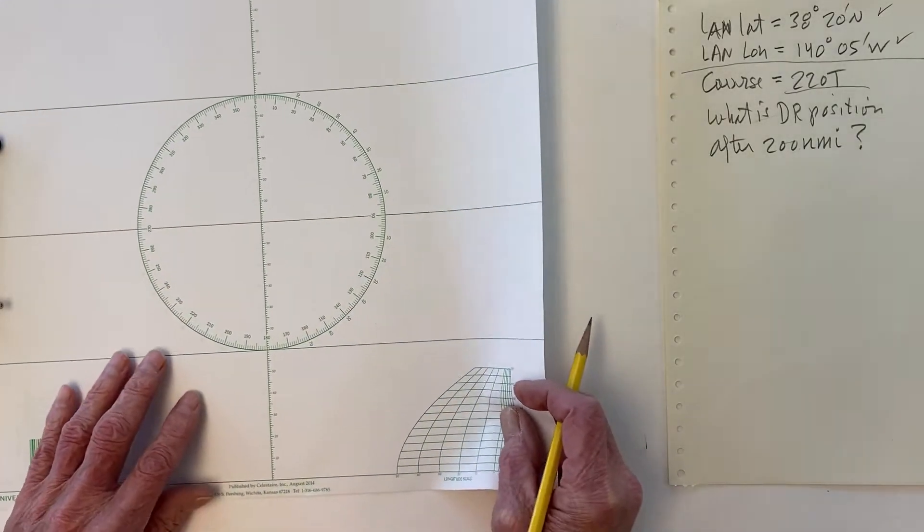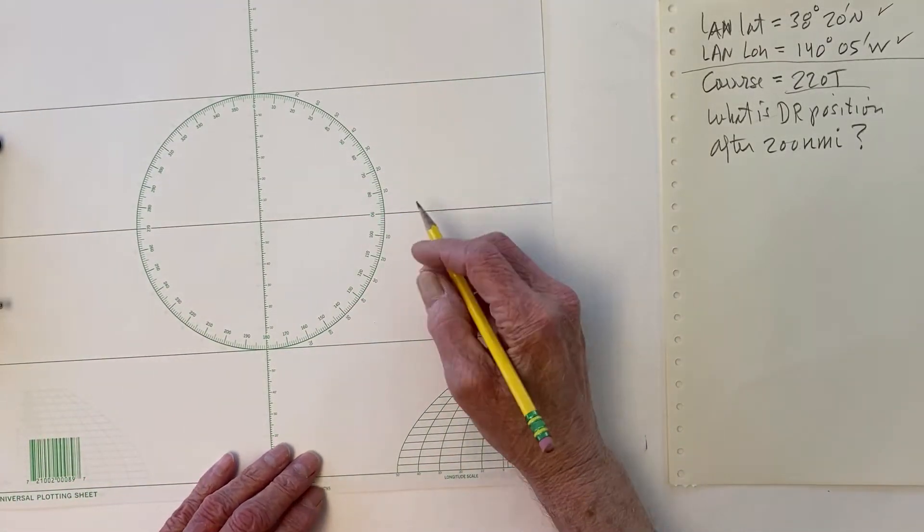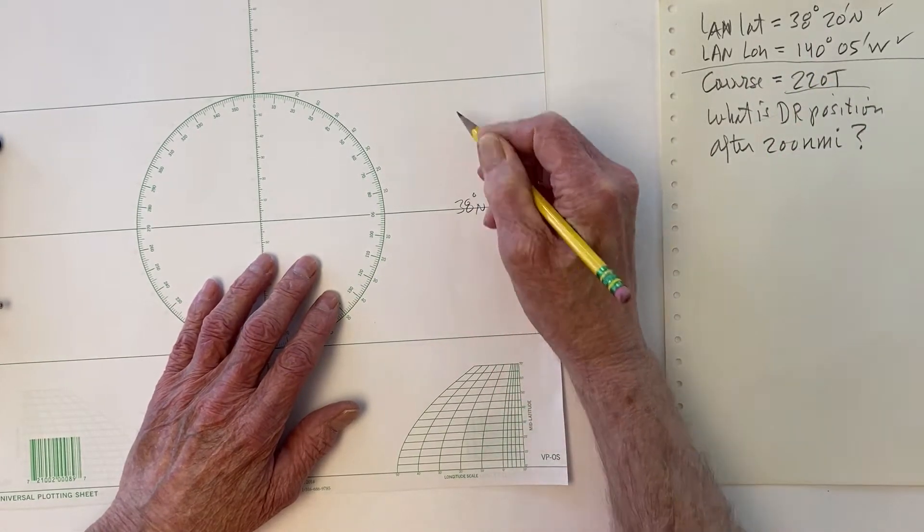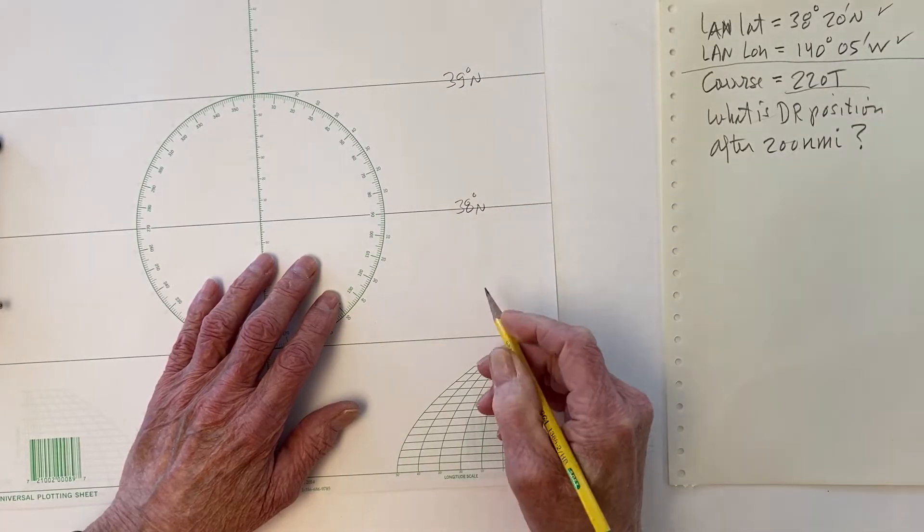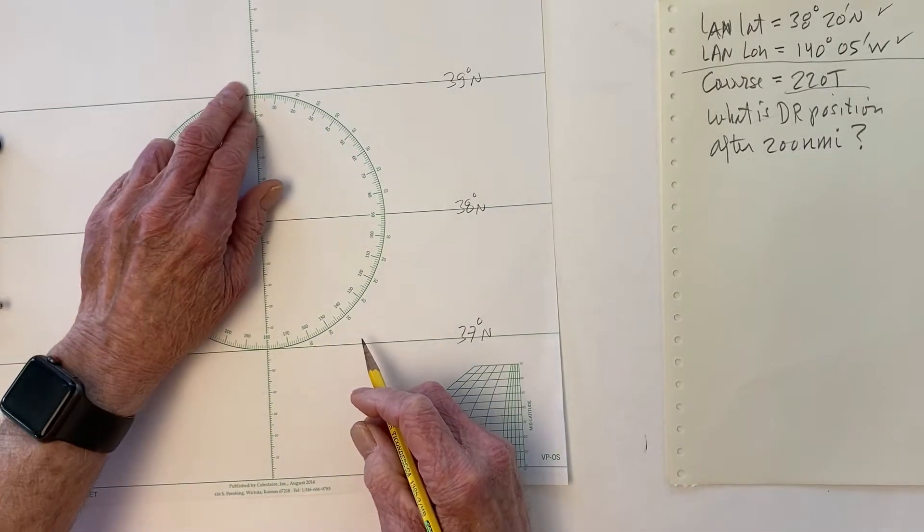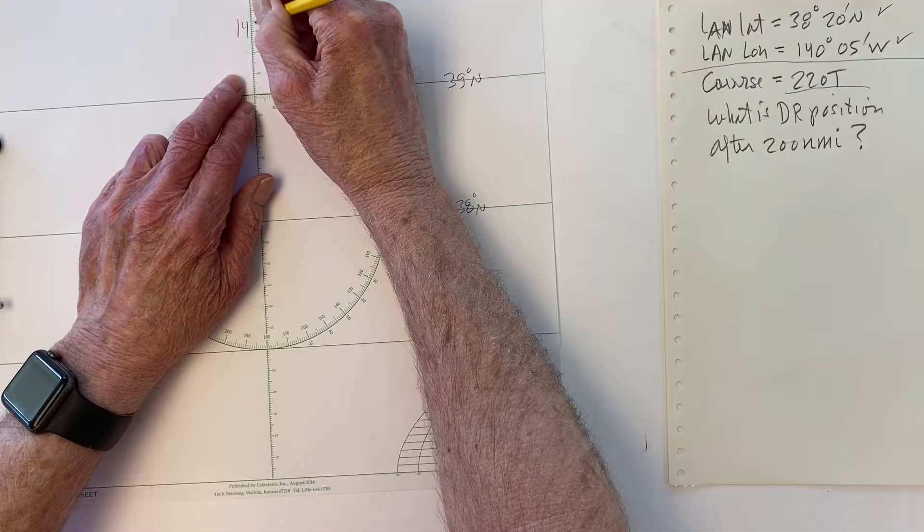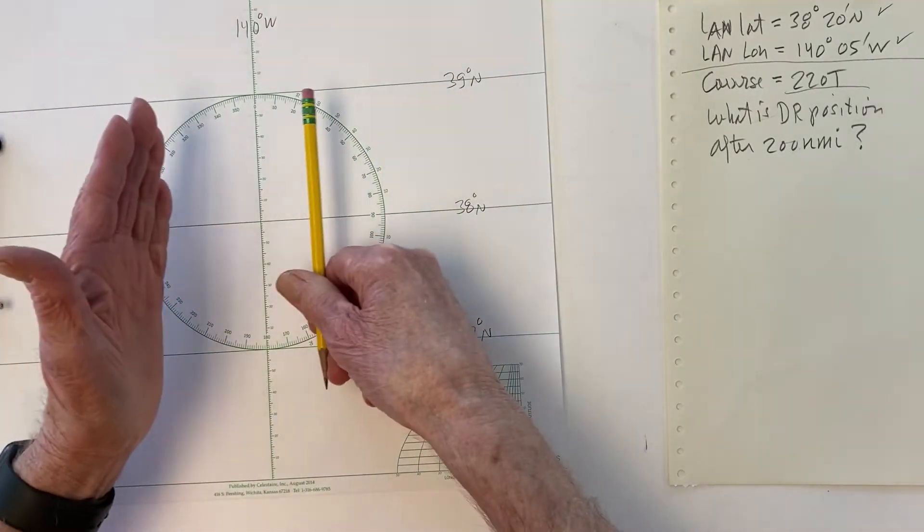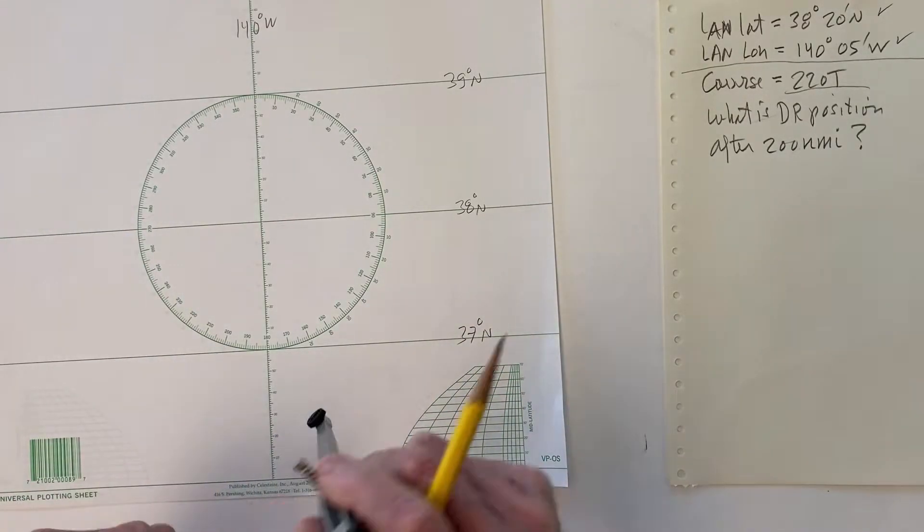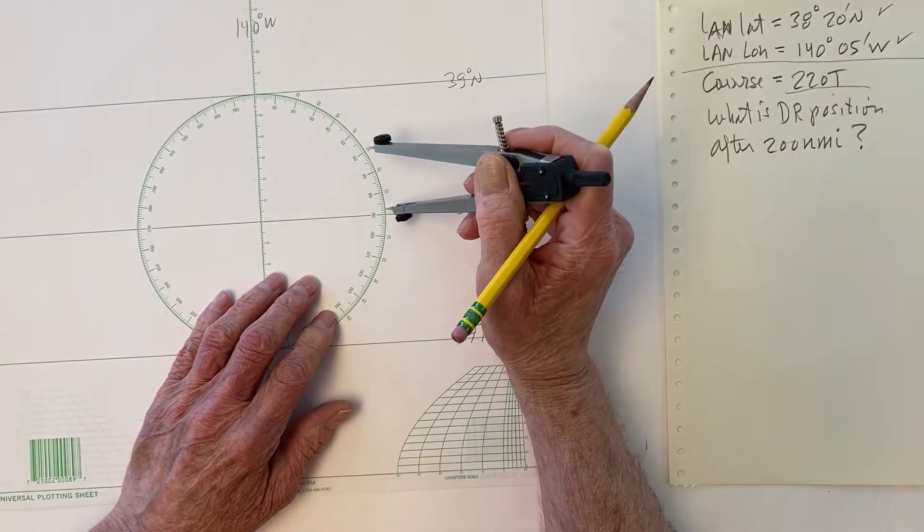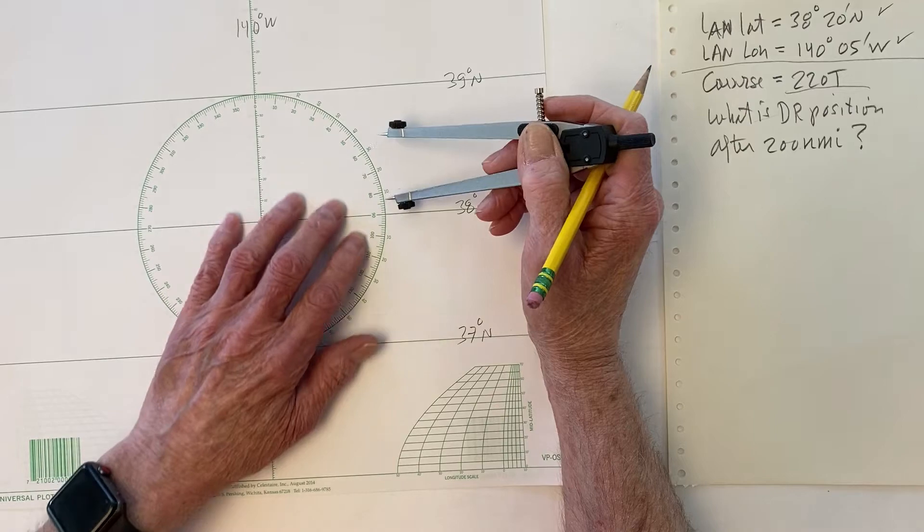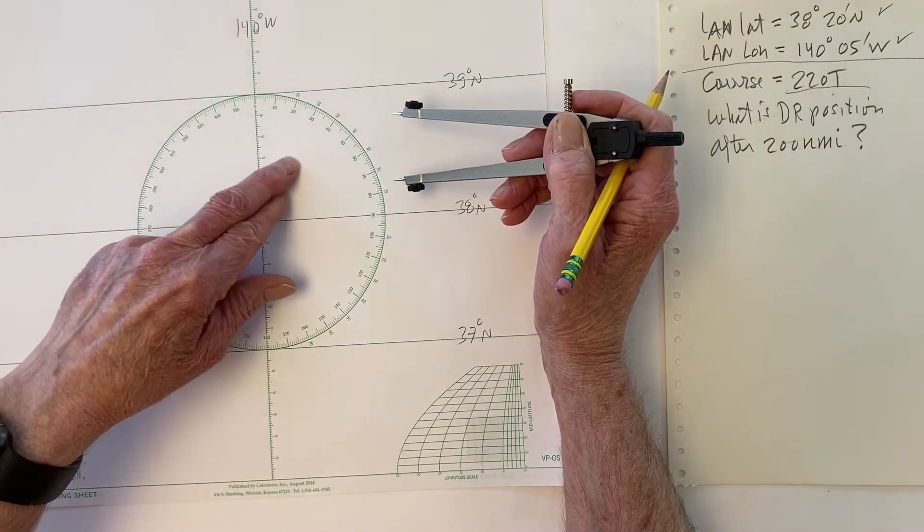And then, so the way that you make this universal is we're going to call this, what is it? We want 38-20. So we'll call this 38 degrees north. That would make this 39 degrees north. And then this would be 37 degrees north here. And then we'll call the middle one 140, 140 degrees west. So now the question is, where is 139 and where is 141? There's a couple ways to do that. One is you can just go up this scale here to 38. So on the outside scale. The inside scale is 0 to 360 all around this way.